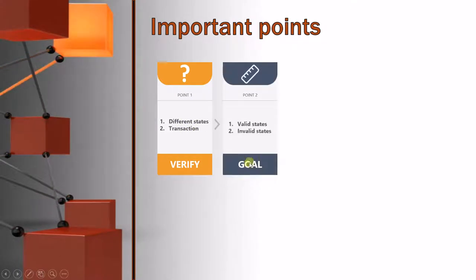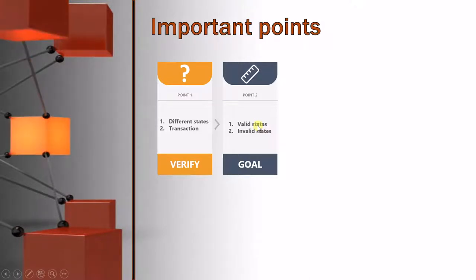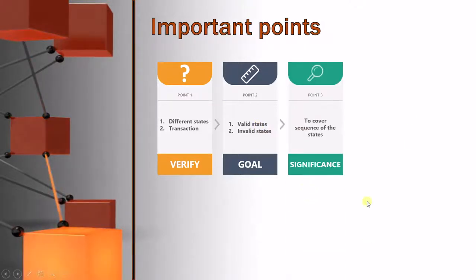What is the goal of state transaction testing? Obviously, to test the valid states as well as invalid states. And the last one: what is the significance? Why are we testing these valid states or invalid states? So that we can cover the sequence of states.